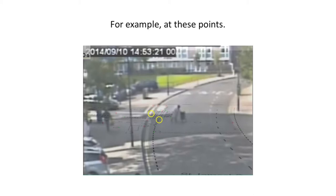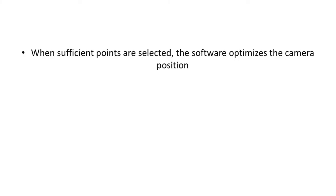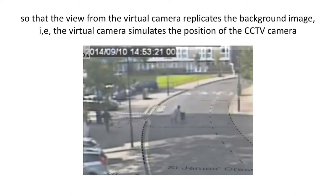A point here — the centre of the junction on the plan — and here, the centre of the junction in the photograph, along with a number of other common points within the plan and the photograph. When sufficient points are selected, the software optimises the camera position such that the virtual camera and the CCTV camera show the same view relative to the ground plan.